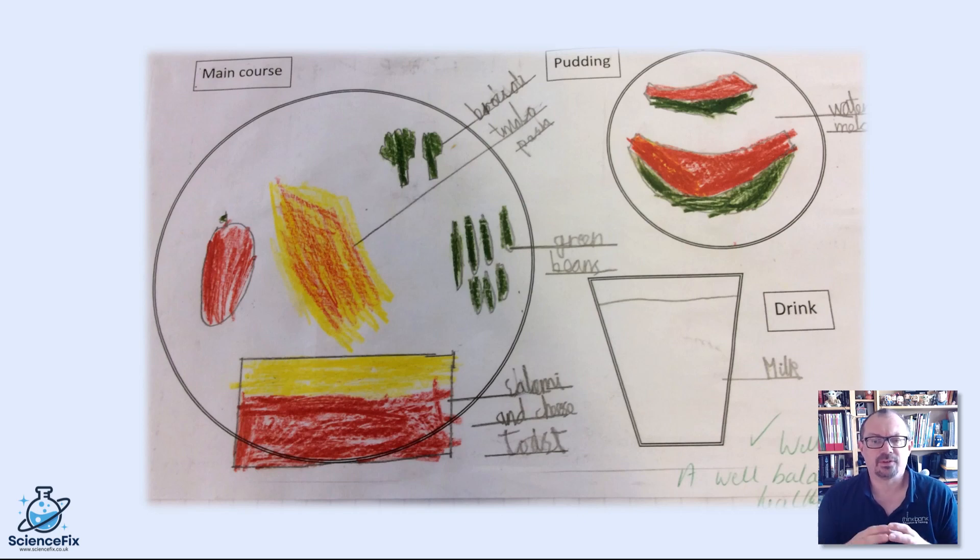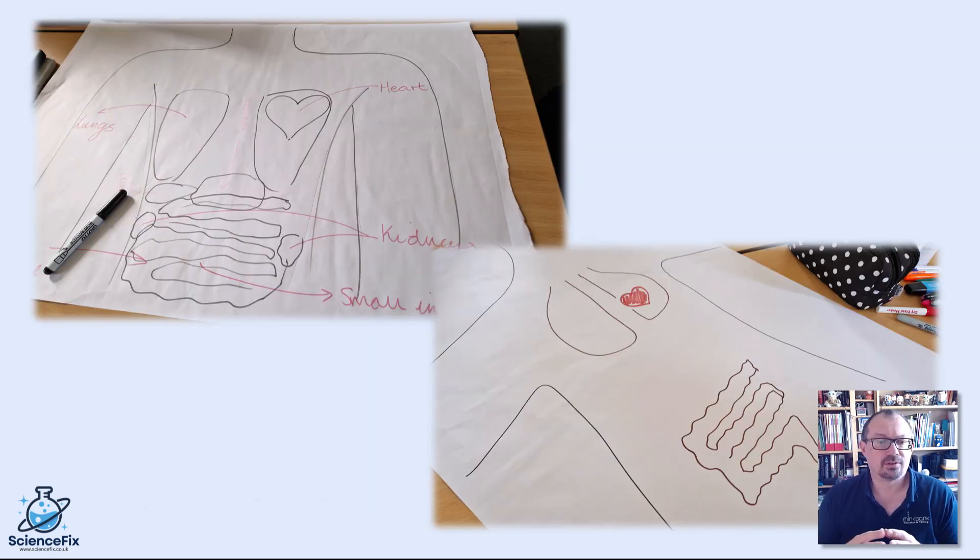You could also ask children to draw concept maps. Give the children the keywords and ask them to cut them out and lay them out on their concept map. Also they can add additional words that they know of and they can link them with pencil lines, explain why they've linked them together. More diagrams here trying to ask children to draw what's inside our bodies.